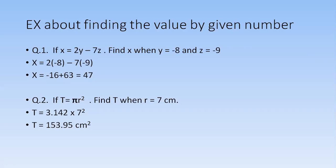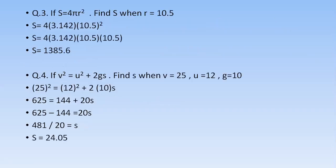All right, so let's move to the next slide. One more example: if S is equal to 4πr², r is 10.5. So once you will put the value of 10.5 in r, I have put it in the black bracket, and π is 3.142.